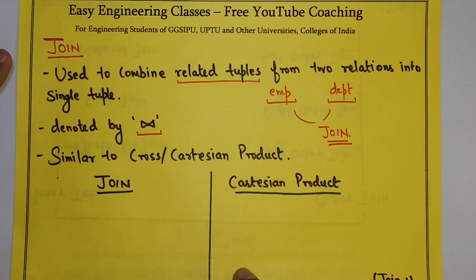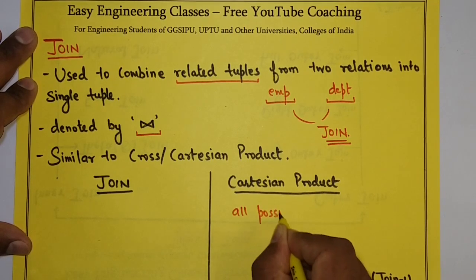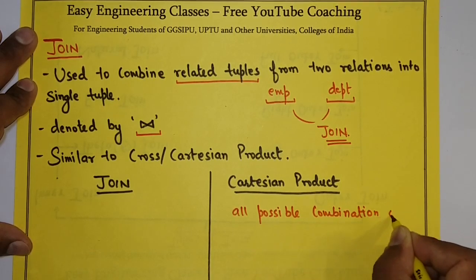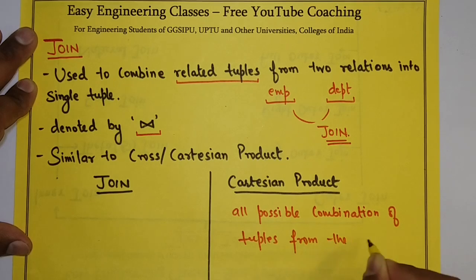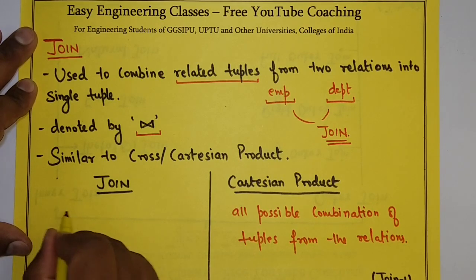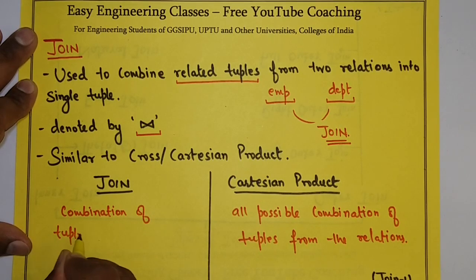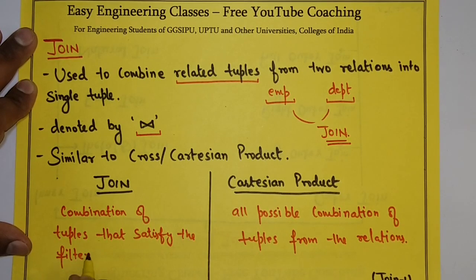In Cartesian or cross product, you will get all possible combinations of tuples from the relations. Whereas in join, you will get only combinations of tuples that satisfy the filtering or matching condition.